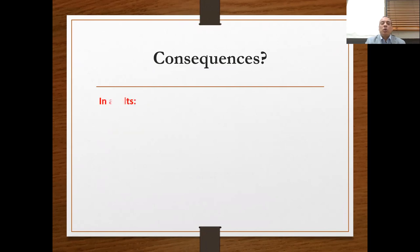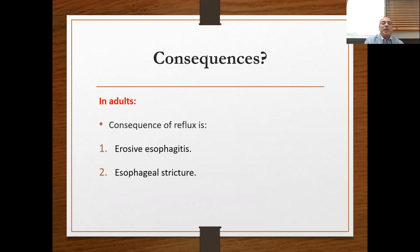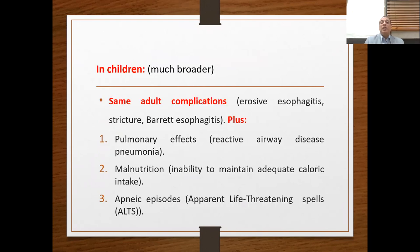Regarding the consequences of reflux: in adults, consequences are limited to erosive esophagitis, esophageal strictures, and Barrett's esophagitis. However, in children, consequences are much broader — including the same adult complications plus pulmonary effects, reactive airway disease, pneumonia, malnutrition, apneic spills, apparent life-threatening spills, and near infant death, which is the most dangerous.